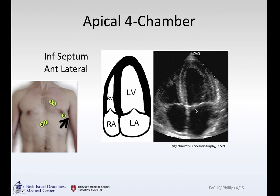It's the inferior septum because there is no aortic valve in the view. The aortic valve is associated with the anterior septum, so what is not the anterior septum has to be the inferior septum. Just as the anterior septum is across from the inferior lateral wall, the inferior septum is across from the anterior lateral wall.